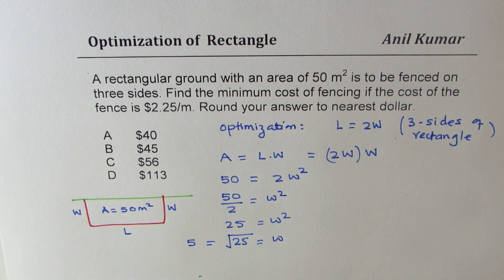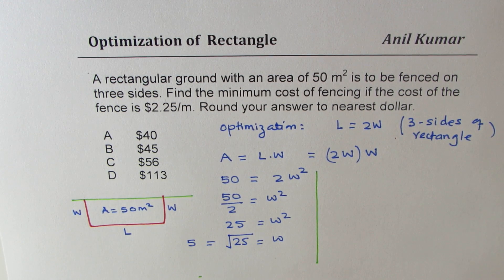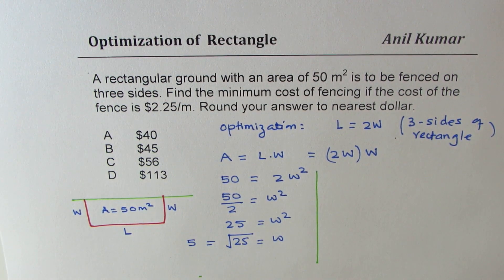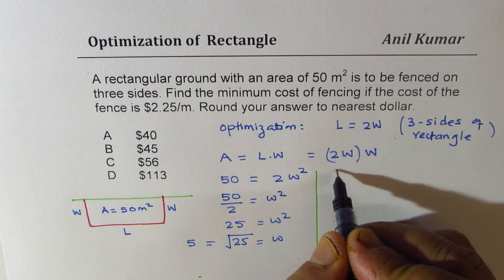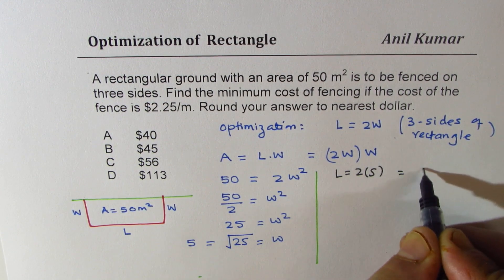Now, since width is 5 meters, length should be 10 meters. Length should be equal to two times five, which is 10 meters.